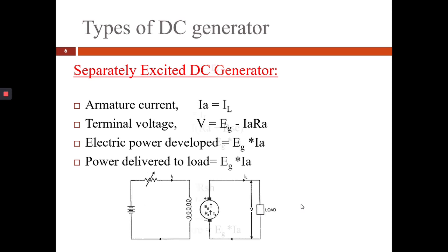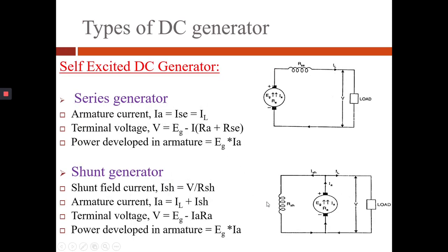Now we will see self-excited DC generator. In case of self-excited DC generator, there are two types: series generator and shunt generator. In case of series generator, the excitation coil is connected in series with the armature winding, and in case of shunt generator, the excitation coil is connected shunt with the armature coil.